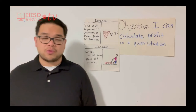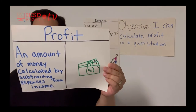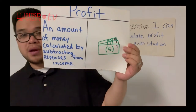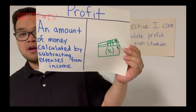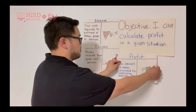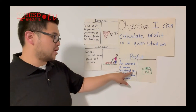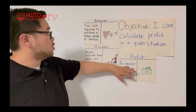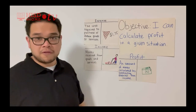The word that we're going to really highlight today is profit. It's an amount of money calculated by subtracting expenses from the income. So with profit, we subtract expenses from the income, and that's how we get a profit.